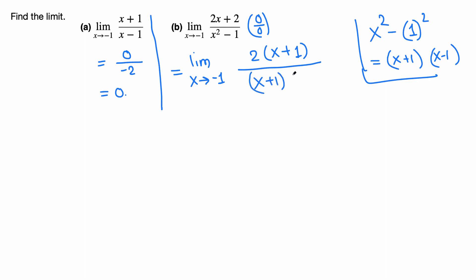Now x plus 1, x plus 1, we can cancel. So there is no 0 on the top, just 2 left, so we can simply plug in and get the answer in the next line. So 2 over, let's replace x by negative 1, so negative 1 minus 1, that's negative 2. And 2 over negative 2 is negative 1. So the limit of this expression is negative 1.